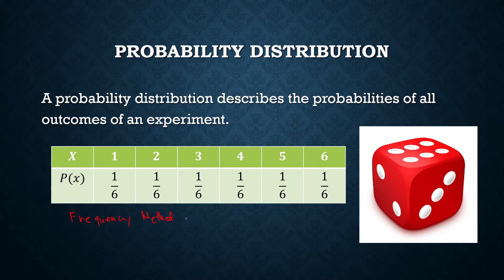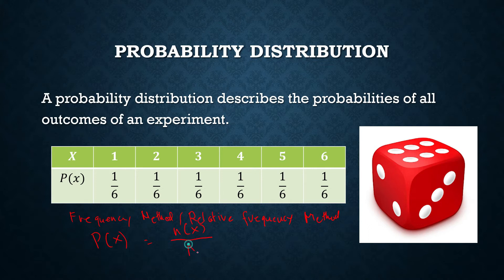It's not the frequency method — it's the relative frequency method. If X is your outcome, the probability that an outcome X will occur is equal to the number of ways X can appear in your experiment divided by the size of your sample space, which we call capital N. In this experiment, you throw one die, so N equals 6. The probability that 1 will appear in one throw is 1 over 6, and it's the same for the rest of the outcomes.